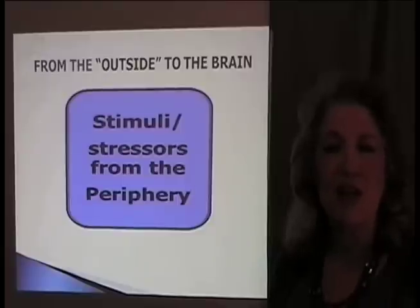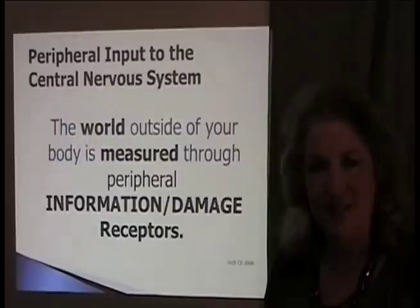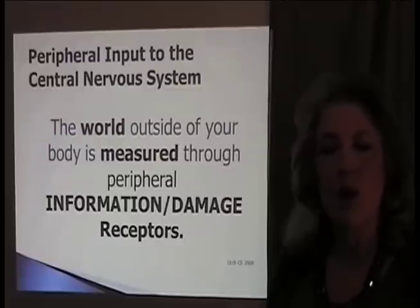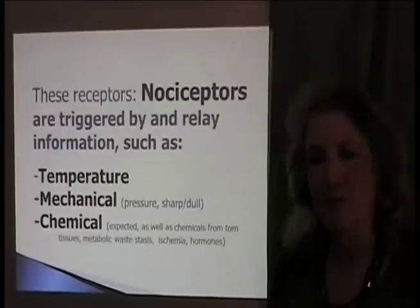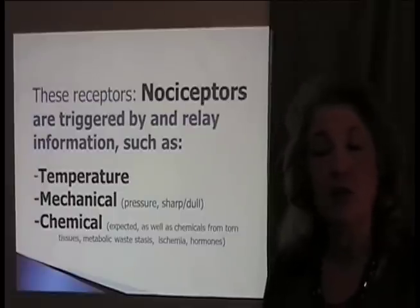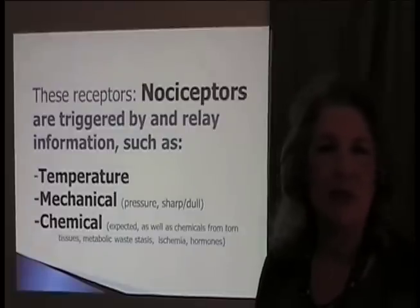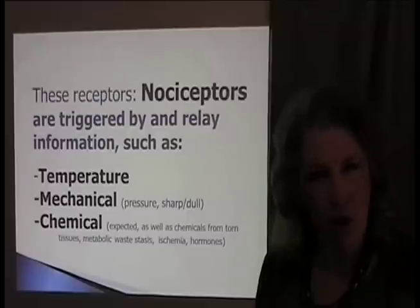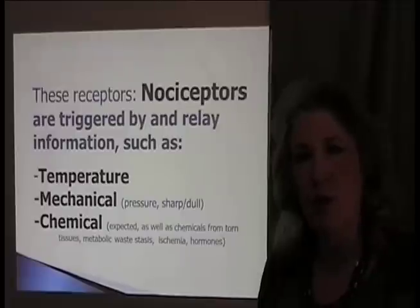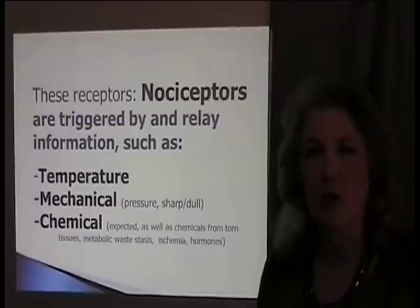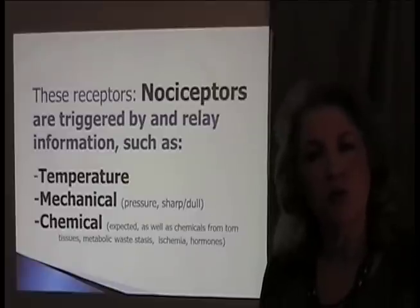The peripheral nervous system measures the world around you and provides information through damage receptors known as nociceptors, triggered by and relaying information related to temperature, mechanical, and chemical environments of the body. Mechanical input includes pressures, sharp, and dull loads. Chemical input may refer to natural chemicals of the body — hormones, neurotransmitters — but also to chemicals that arise in a disharmony state, such as chemicals from tissue tearing or buildup from ischemia.